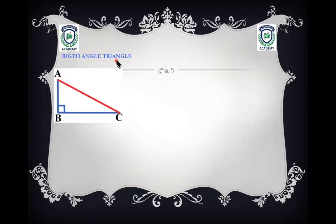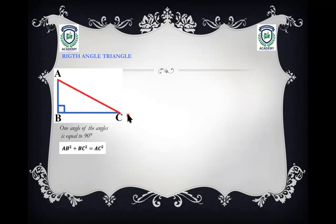A right angle triangle is any triangle that has 90 degrees in it. When we talk about right angle triangles, we remember the Pythagoras theorem: the square of the hypotenuse is equal to the sum of the squares on the other two sides — AB² + BC² = AC².